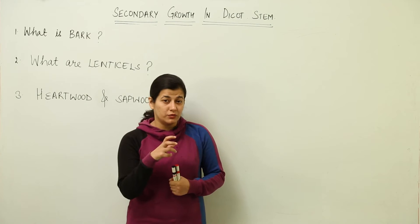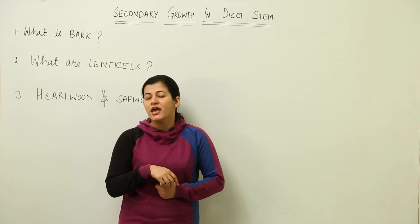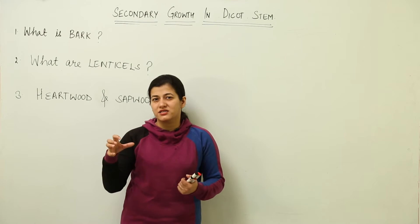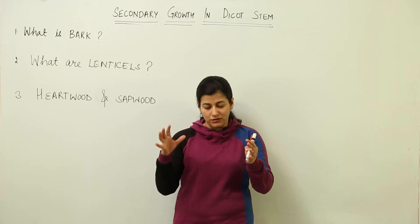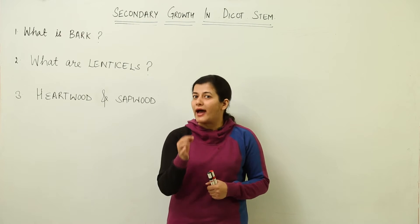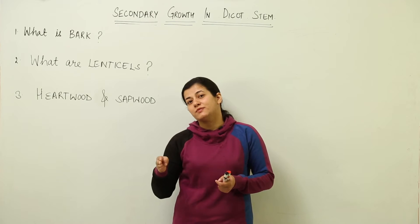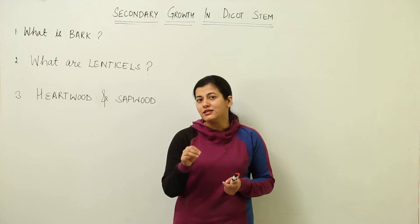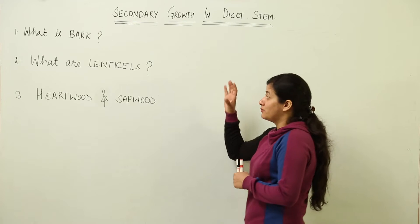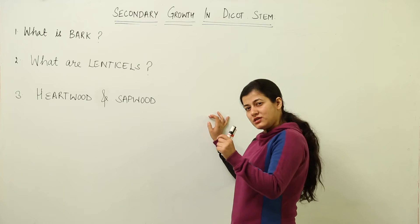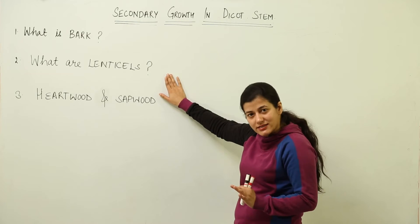You might have heard of the term bark — not the bark which is the sound produced by dogs, but the bark which is present in the tree. Certain people have read about bark in their historical studies — that in the beginning, tree bark was used for making paper. We are going to see the anatomy of that word bark. It is the skin of old trees that is easier to peel off.